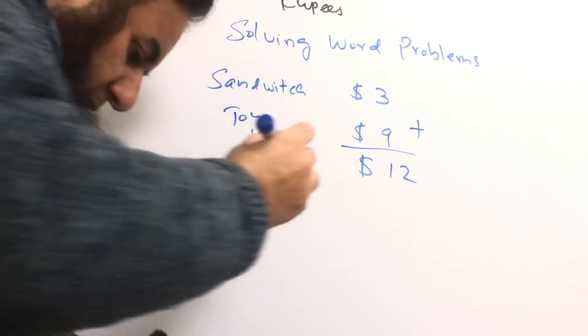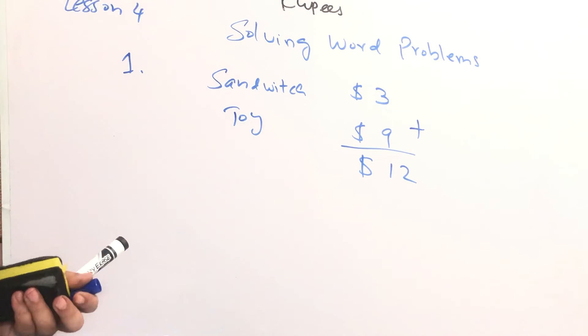twelve dollars. Okay, so this is the amount Ahmad has to pay to buy both the things.